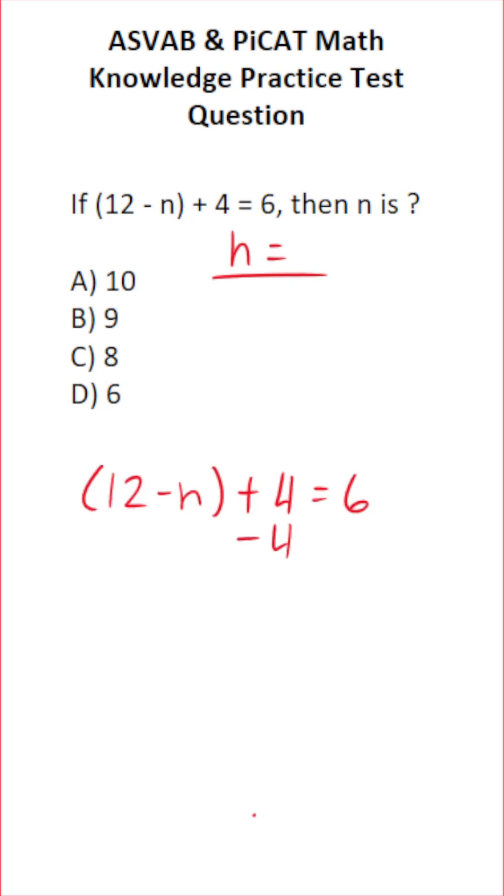So the first thing I'm going to do is subtract 4 from both sides. In doing so, this crosses out, leaving me with 12 minus n over here. 6 minus 4 is 2.